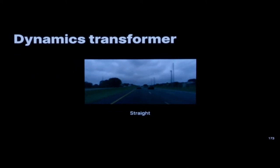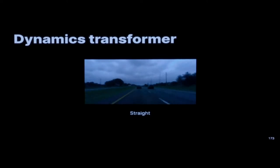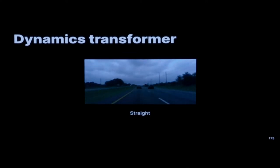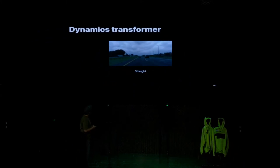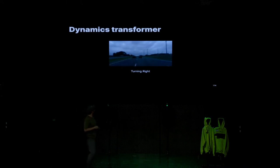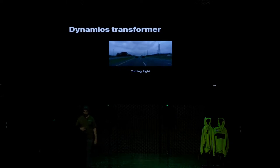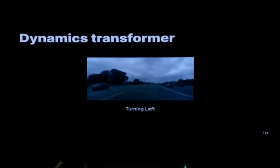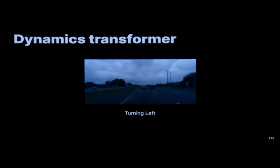We do all this and it works. This is our dynamics model, our simulator. Here we just tell it to drive straight — a pretty nice highway drive. We can also ask it to yank the steering wheel to the right, and as you can see, it turns right, changes lanes, even goes out of the road and drives on the grass. You can also tell it to turn left, cross the median, drive to the opposite lane, even get close to oncoming traffic.